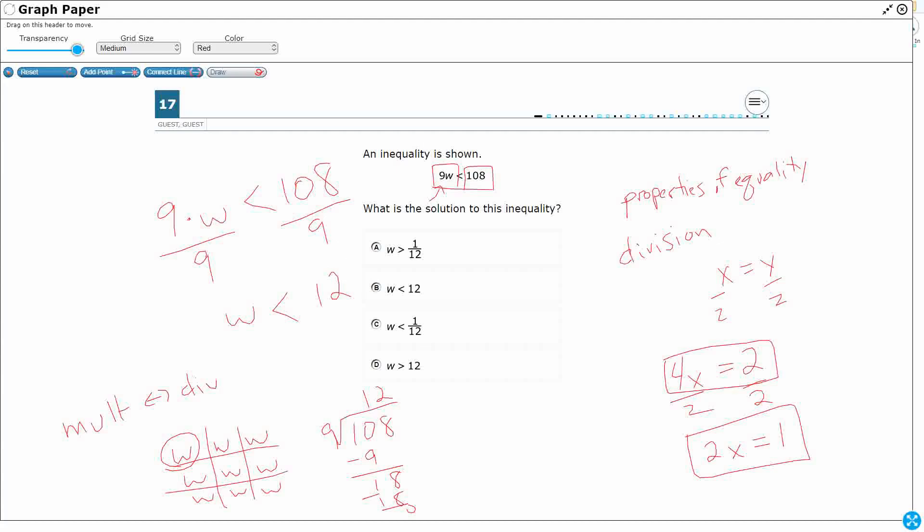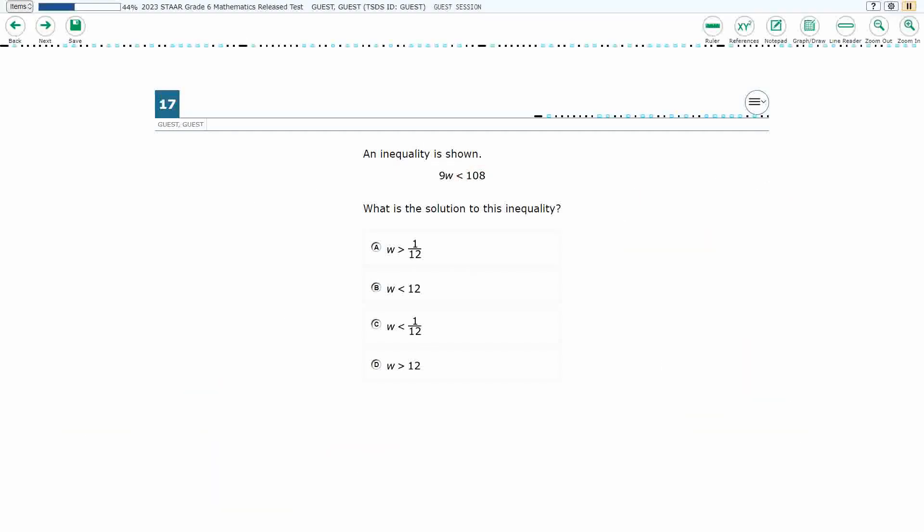Because I use this division property of equality to divide both sides of the inequality by 9 because I knew that 9 times W, the inverse operation of my multiplication is division. Whereas if I had addition, I would use subtraction. If I had division, I would use multiplication. Those are the inverse operations. So my answer is going to be B, W is less than 12.